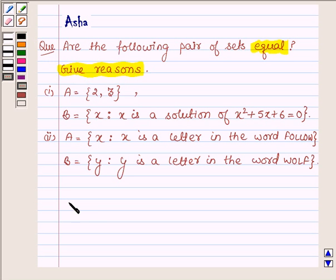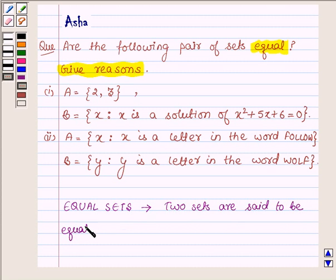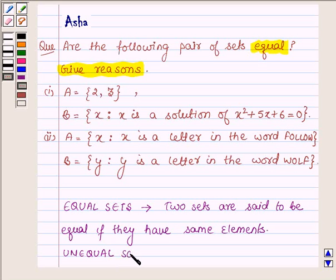So first let us learn what are equal sets. Two sets are said to be equal if they have exactly the same elements. Otherwise the sets are called unequal. That is, unequal sets are those sets which are not equal sets.